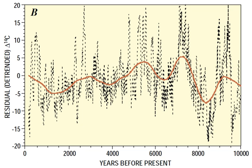Cycle 23 lasted 11.6 years, beginning in May 1996 and ending in January 2008. The maximum smoothed sunspot number — the monthly number of sunspots averaged over a 12-month period — observed during the solar cycle was 120.8, and the minimum was 1.7. A total of 805 days had no sunspots during this cycle.